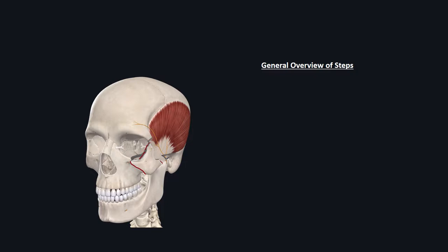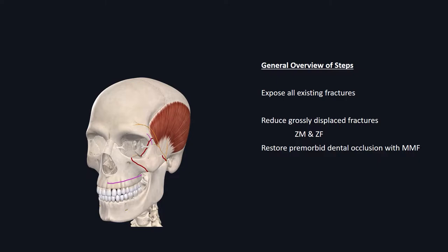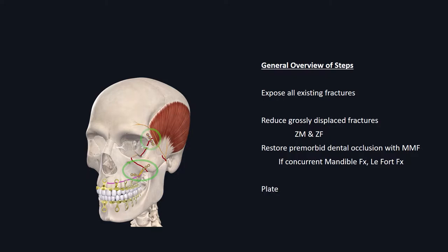The general overview of repair steps is as follows. Expose all existing fractures using an intraoral incision, lateral brow incision, plus or minus transconjunctival incision. Then reduce the grossly displaced fractures. Once reduced, confirm proper reduction at the lateral buttress marked by the zygomatic maxillary suture line and the fracture located next to the zygomatic frontal suture line. If there is disruption of dental occlusion, start with maxillomandibular fixation to restore premorbid occlusion, applicable for concurrent mandible or Lefort fractures. Once MMF restores premorbid occlusion and you have proper reduction, you can begin plating.